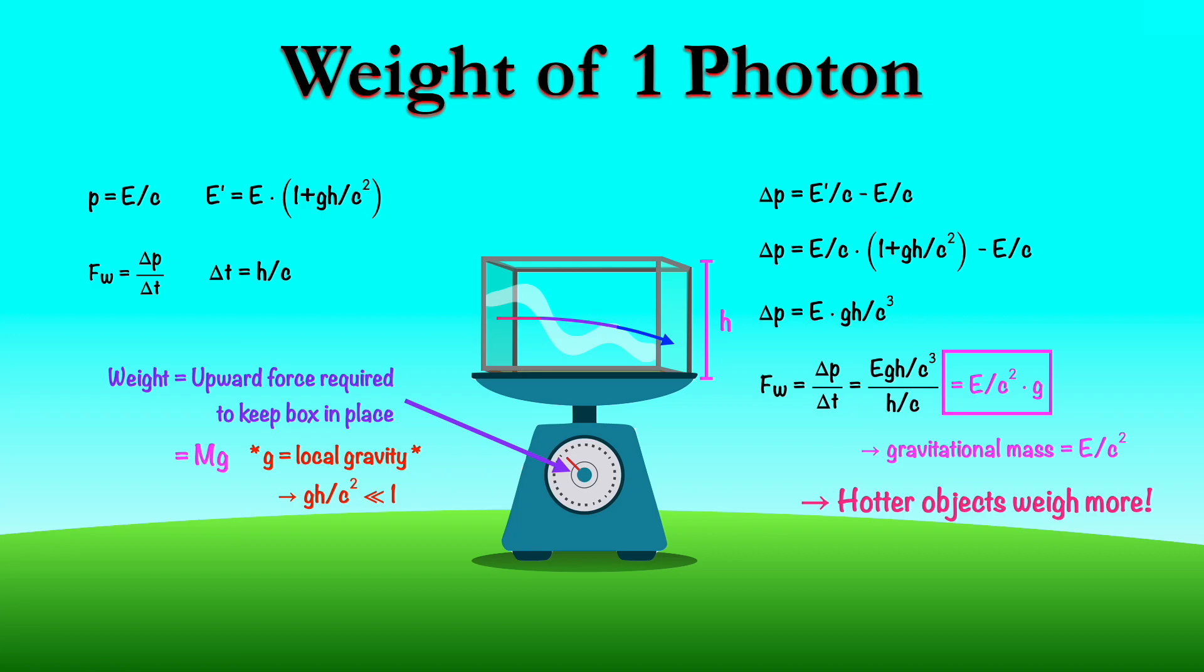Now the real question is, does this actually happen? Because this is a very nice theory and calculation, but ultimately what matters is, can it be observed? Well, in the case of a large box like this, it'd be very difficult to measure. Mainly because the extra weight from this E over c squared is so tiny compared to the mass of the box, or I should say specifically the rest mass of the box, that if you had an instrument that was capable of detecting that extra weight, it would almost certainly be capable of detecting changes in the gravitational field due to the height of the box.